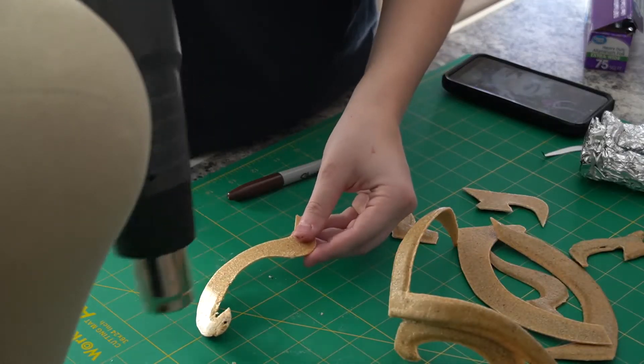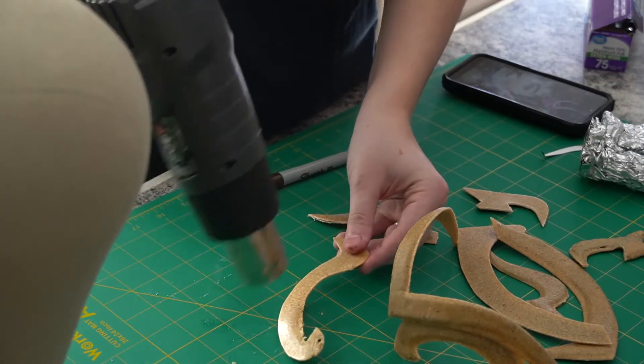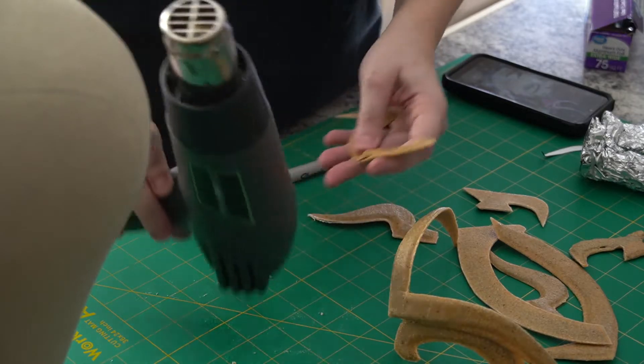Once all the pieces were cut out I slowly began to heat shape them together, using my mannequin head to bend them around it until it fit the shape that I wanted. After that I tidied up the ugly corners and rougher edges by heating them up and smoothing them down with my finger or just tugging them behind the circlet itself.